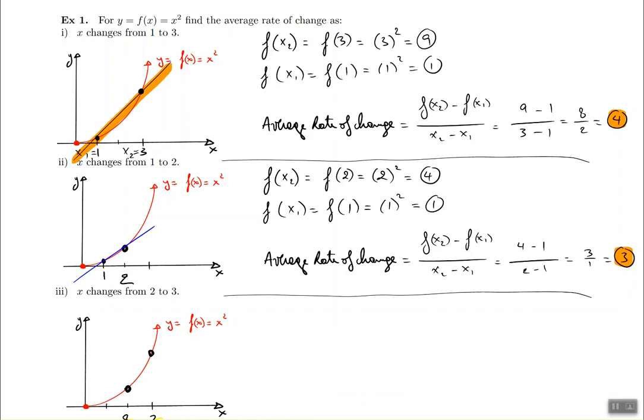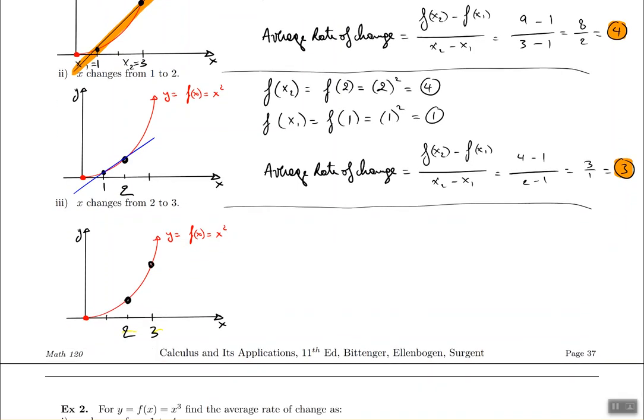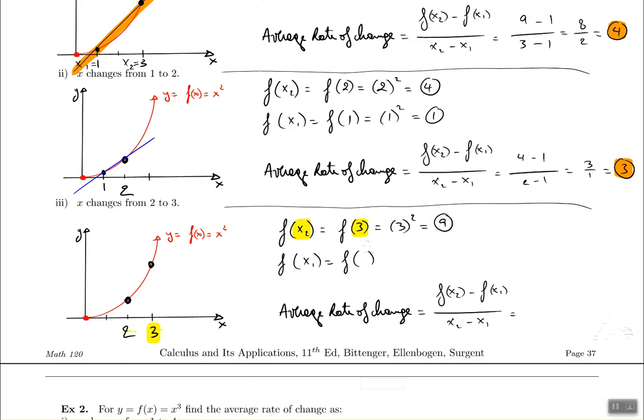And again we will do the same thing in the last part where x is changing from 2 to 3. So in this case the 3 represents the second coordinate in the list. So we're going to put it in place of x2. So that's going to be a 3 right there and the function is x squared. So 3 squared is going to be 9 ultimately. And x1 is going to represent the number 2 in this particular problem. So that's what we put in place of the x1. So 2 and the function is x squared. So 2 squared will be 4.